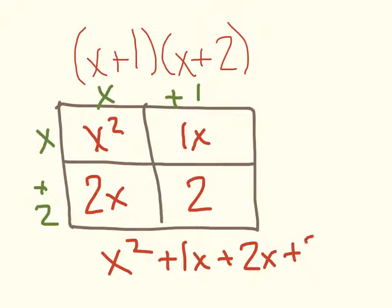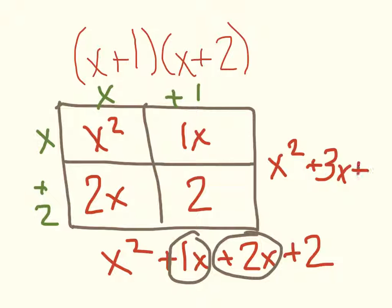Now I can go ahead and combine my like terms, a positive 1x and a positive 2x. So my ultimate answer is x squared plus 3x plus 2. I've multiplied those two binomials to get this answer.